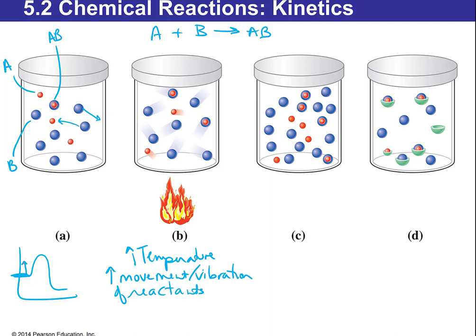Increasing the concentration of reactants also increases reaction rate. If you have a lot more A and B in the same container, they'll collide more often simply because they're denser. Increasing reactants increases how fast the reaction progresses. A good example is starting a charcoal grill — if it goes out, you pour more lighter fluid on. Adding more reactant means a much bigger, faster flame. Rate here means how fast the reaction progresses.